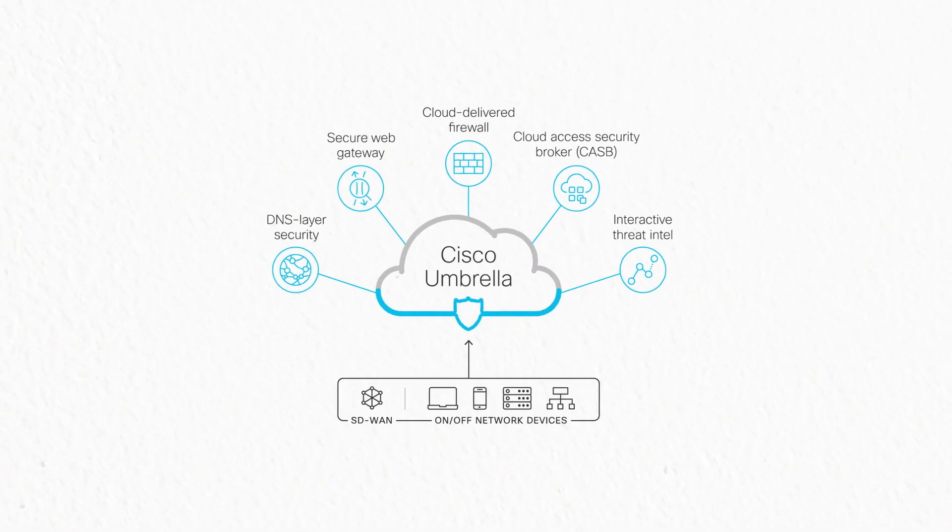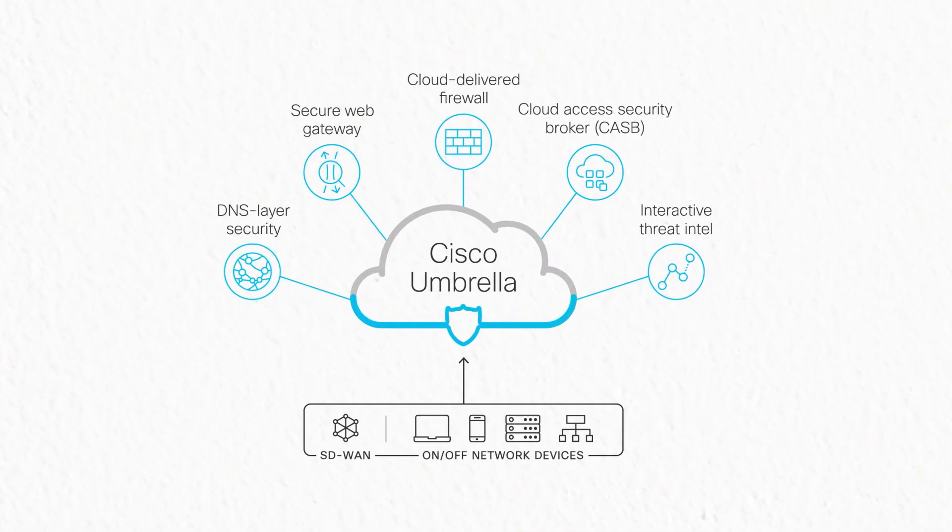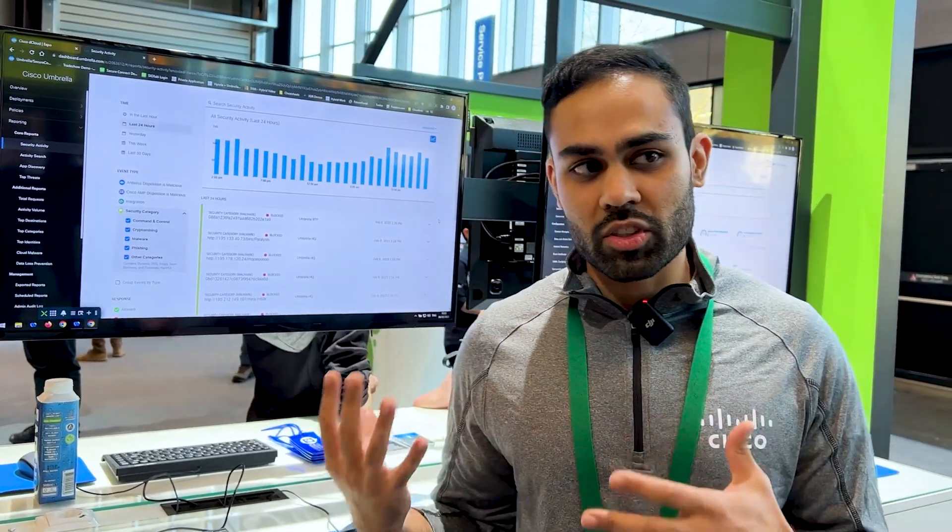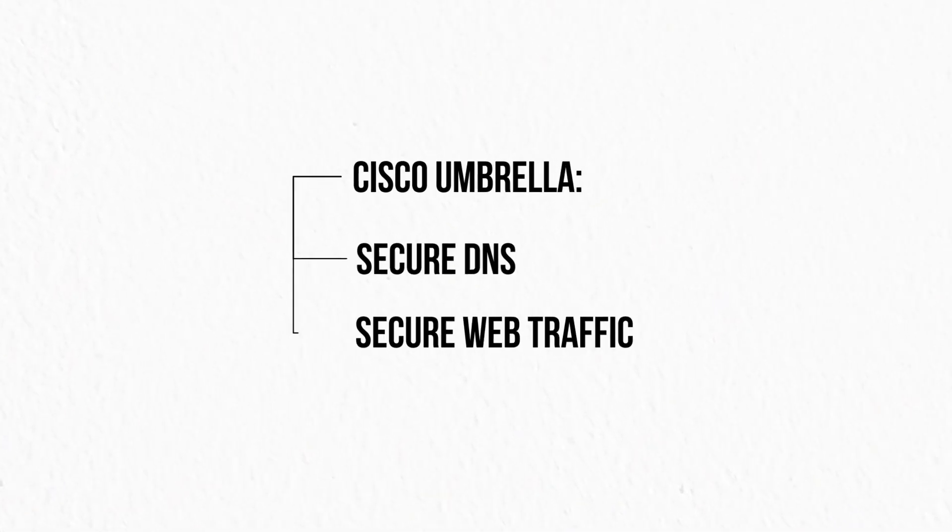David Bombal here at Cisco Live with Neil. Neil is going to talk about Cisco Umbrella. Cisco Umbrella is a really cool technology — it's not only beneficial for corporations and big companies, it's actually beneficial for anybody at home. It starts with internet security. When we talk about secure internet access, there are two pieces: secure DNS and secure web traffic.